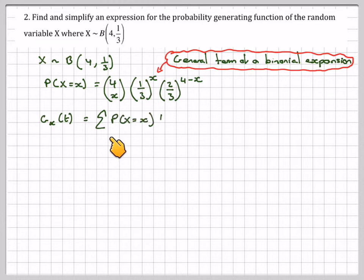So gx of t is the sum of the probability of X is equal to x times t to the x, for x.